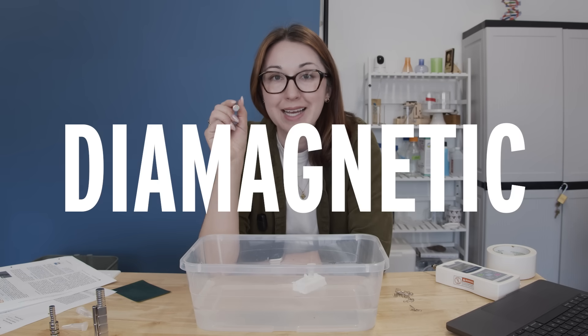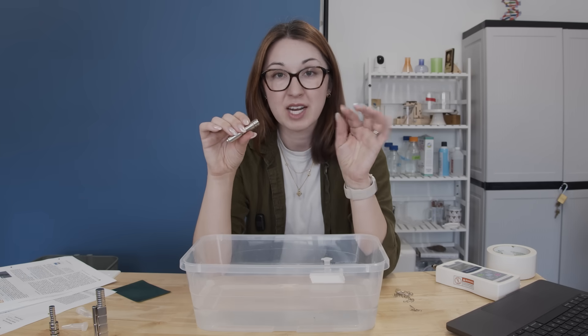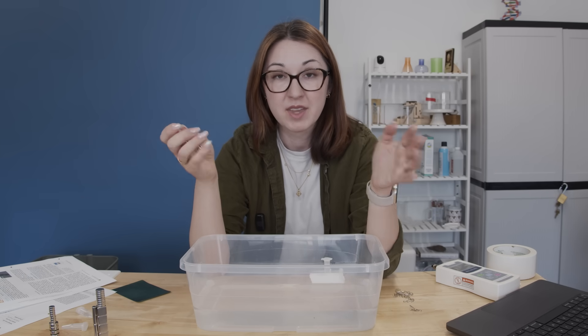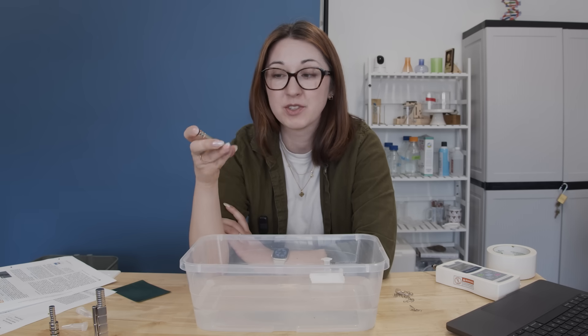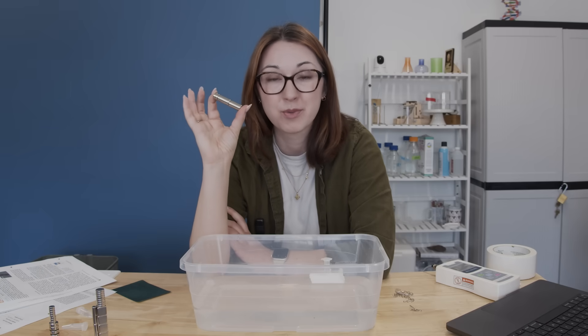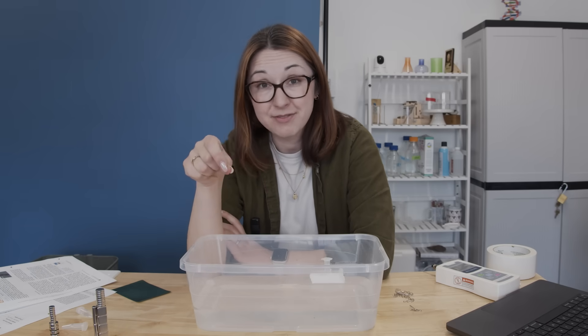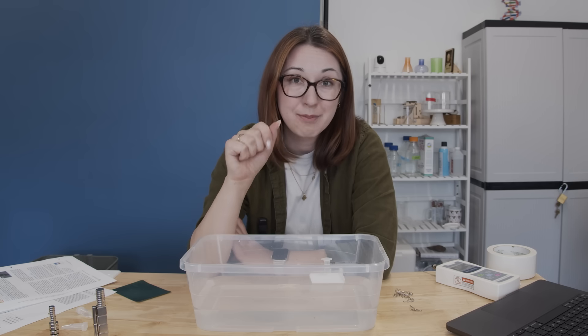It turns out that water is diamagnetic. If something is ferromagnetic it means that it is strongly attracted to both poles of a magnet. If it's paramagnetic that means that it's weakly attracted to both poles of a magnet. And if it's diamagnetic that means that it is weakly repelled from the poles of a magnet. Iron is ferromagnetic, aluminum is paramagnetic, and water is diamagnetic.